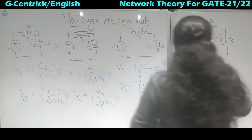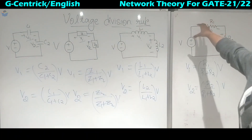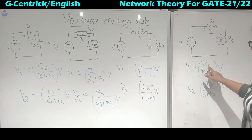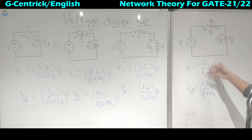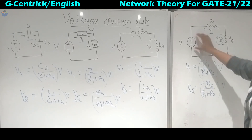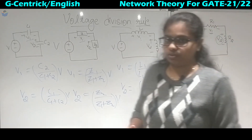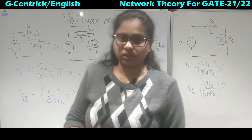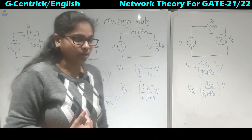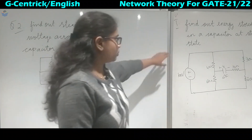So to summarize: if we want to calculate the voltage across R1, we take the value of that resistor only and divide it by the sum of the resistors, multiplied by the source voltage. Based on this voltage division rule, we will now see some numerical problems.